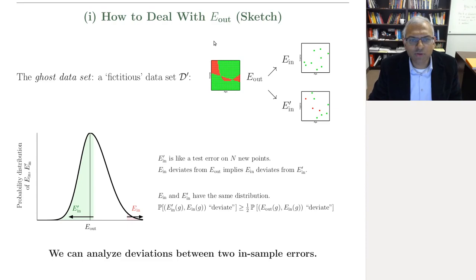And if you evaluate on this data set prime, you get another in sample error. But now that data set prime, g was not selected for that data set prime. So this E_in prime will be close to E_out, related by the sort of single hypothesis Hoeffding bound.